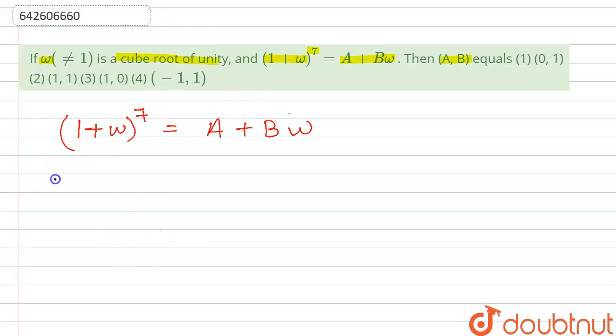We should know that 1 plus omega plus omega square is equals to 0 and omega cube value is equals to 1.